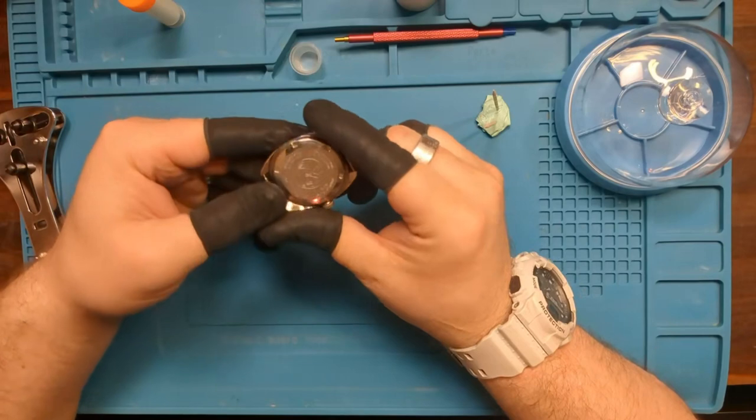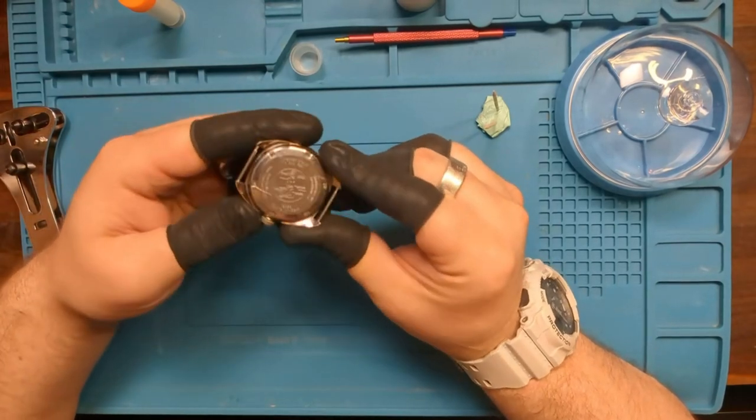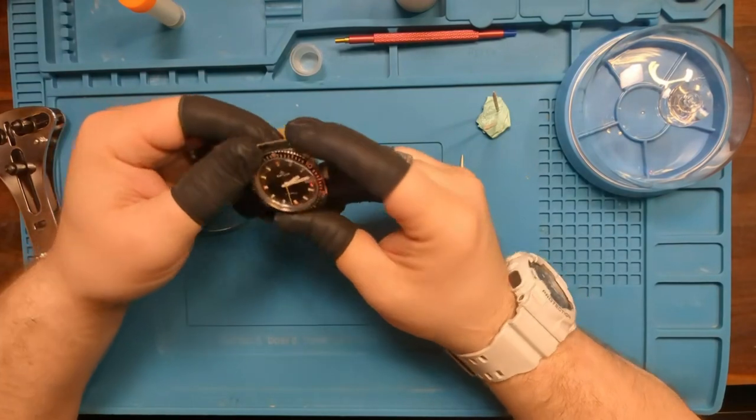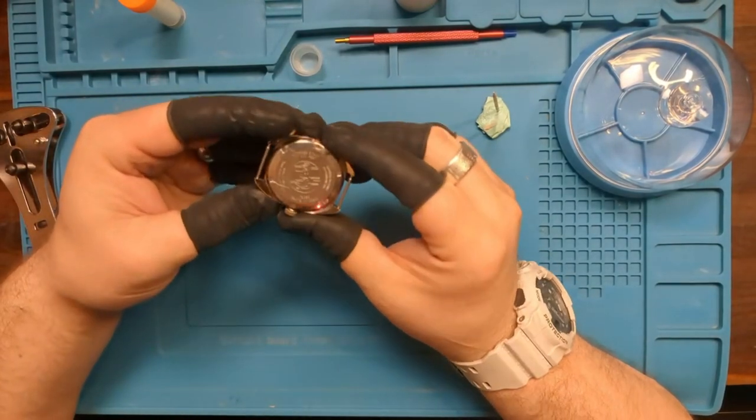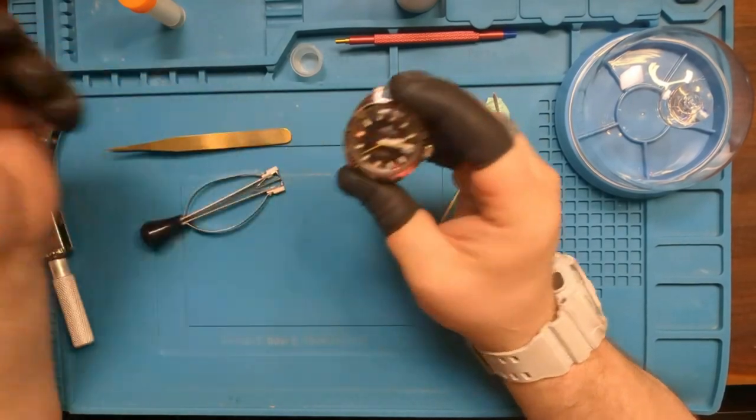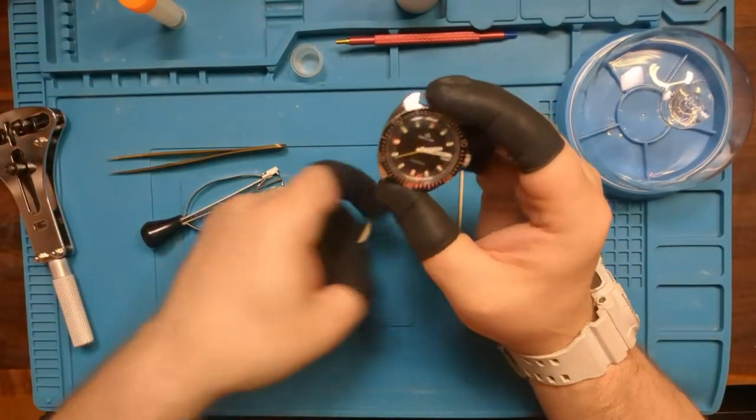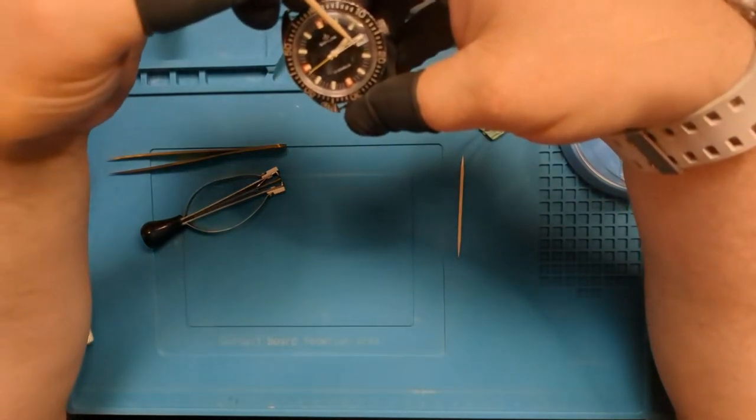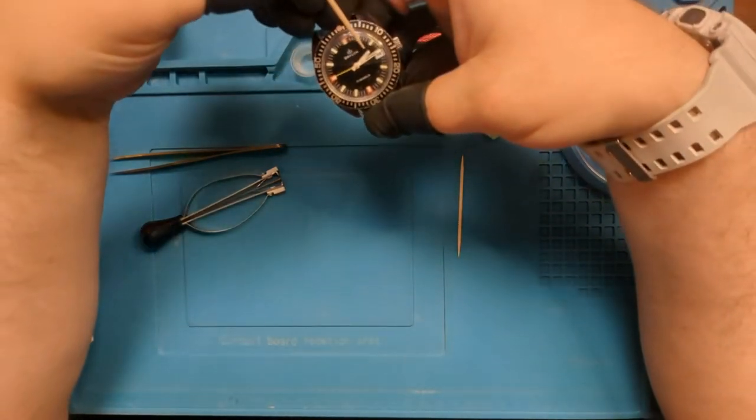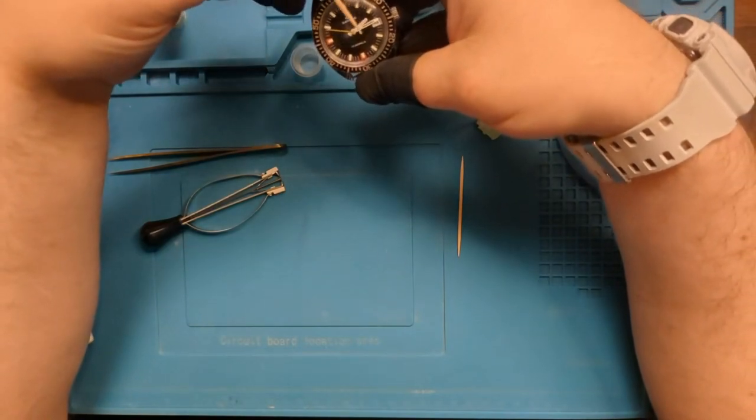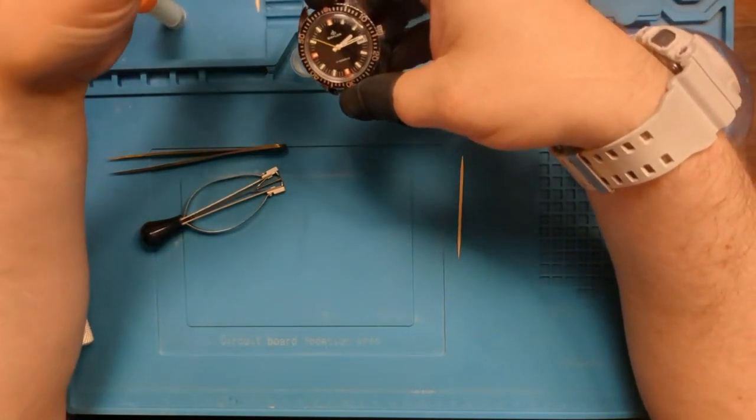So today what I've got is an old Baylor dive watch. Baylor was one of the brands that was sold under the Zales company and this I believe is from the 70s, early to mid 70s. But if you can see right here, the loom is starting to come off of the hands. As a matter of fact, it has come off of the minute hand.